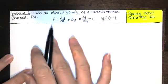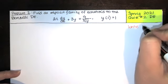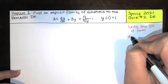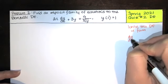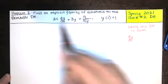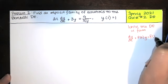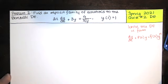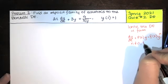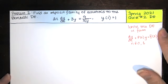Let's start by writing the Bernoulli equation in the right form. Remember that if you have a Bernoulli DE, it can be written in this form. The derivative of the dependent variable with respect to the independent variable — in this case, the dependent variable is y and the independent variable is t — plus a function of the independent variable times the dependent variable equals a function of the independent variable times the dependent variable to some power. We solve that with an integrating factor.